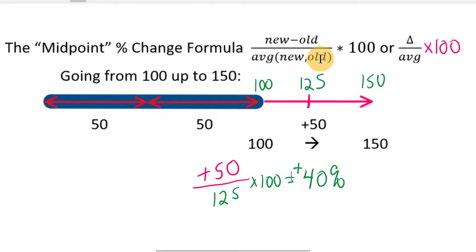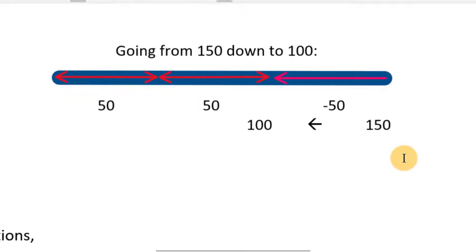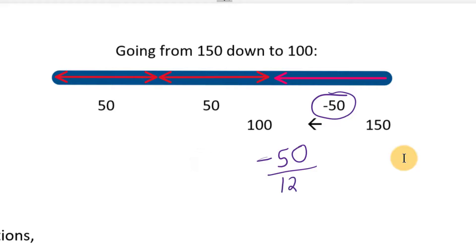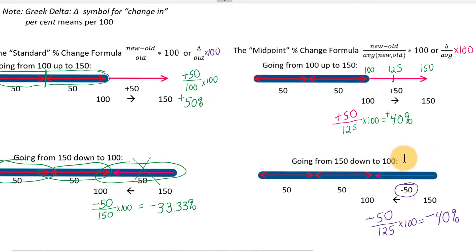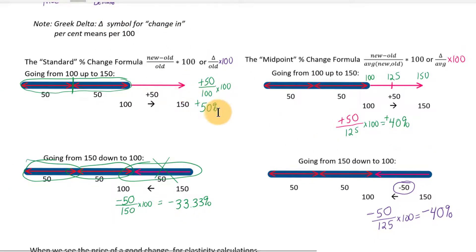Now what happens going from 150 down to 100? The change is negative 50, and we divide by the same average of 100 and 150 — which is 125 — times 100. That gives a 40 percent decrease, or negative 40 percent. The benefit: instead of getting 50 percent going up and 33 percent going down, we get a 40 percent change either way when using the midpoint formula.